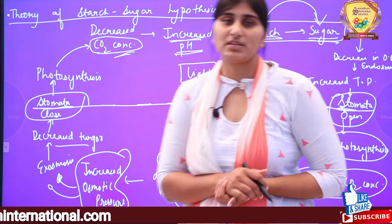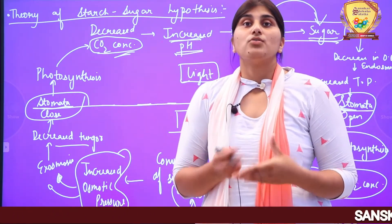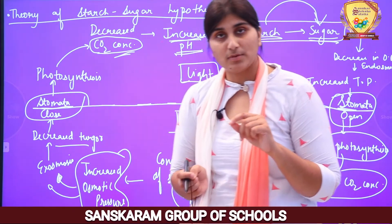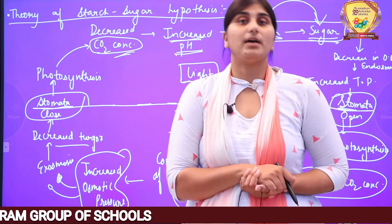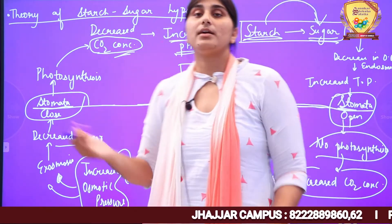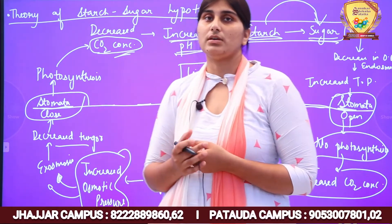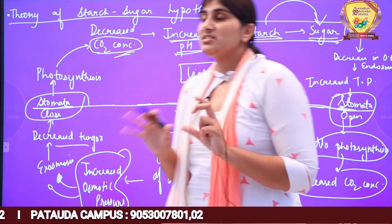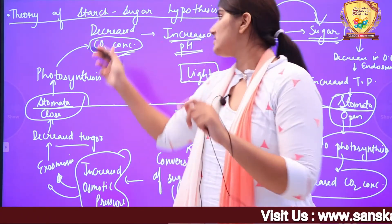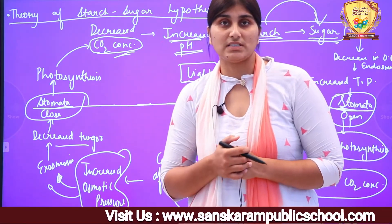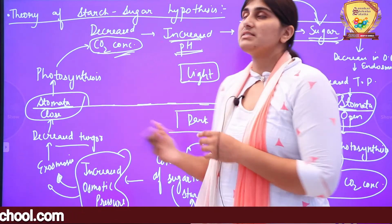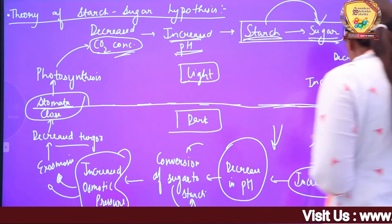पहली photosynthetic theory में problem क्या थी? Guard cell में अपनी photosynthesis हो ही नहीं पाती, क्योंकि उसके पास Rubisco enzyme नहीं होती — यह चीज़ मैं आपको बता चुकी हूँ, इसलिए उसको discard कर दिया। Starch-Sugar Hypothesis में problem यह है कि कुछ plants की guard cells में starch पाया ही नहीं जाता। इसके अलावा, CO2 concentration से जो pH changes होते हैं वो बहुत little होते हैं — इतने ज़्यादा नहीं कि इस reaction को initiate कर सकें। इन कमियों की वजह से इस theory को भी नहीं माना जाता।